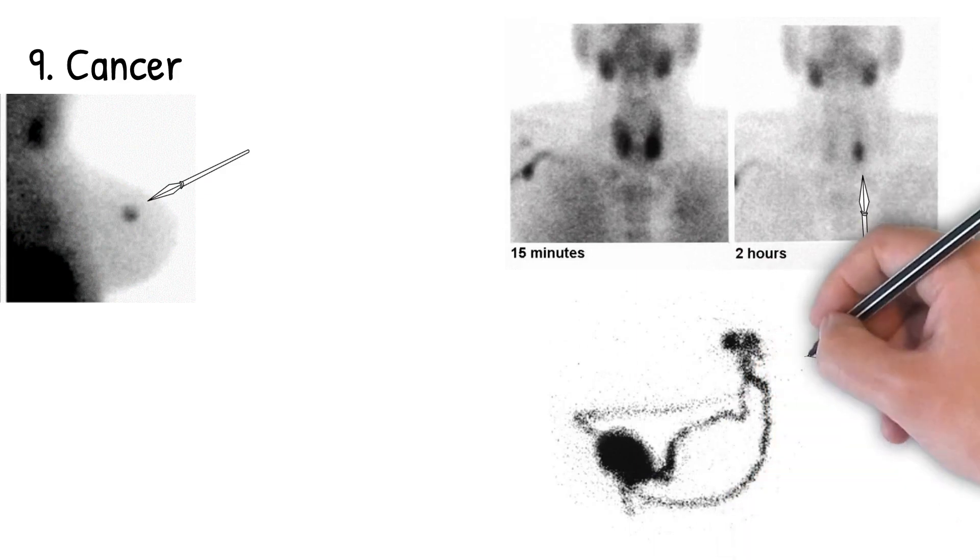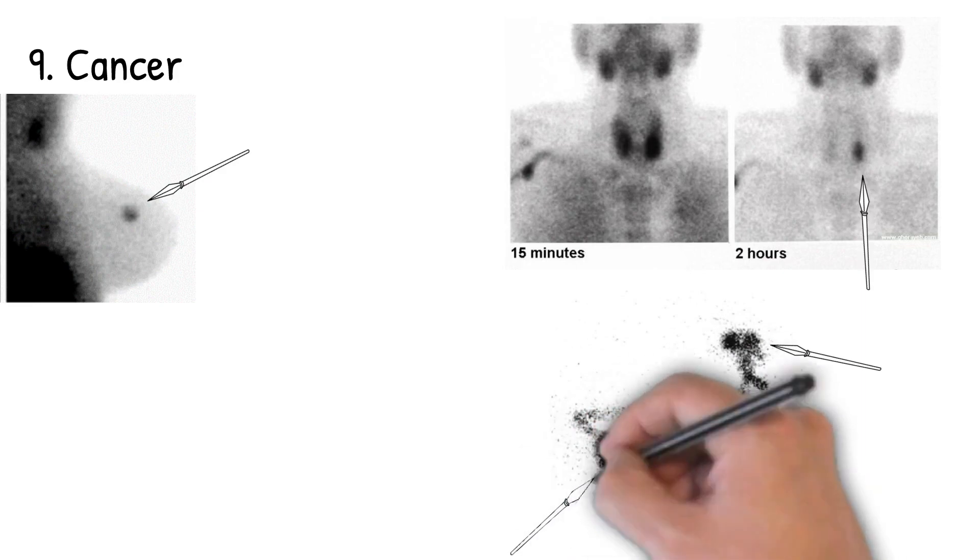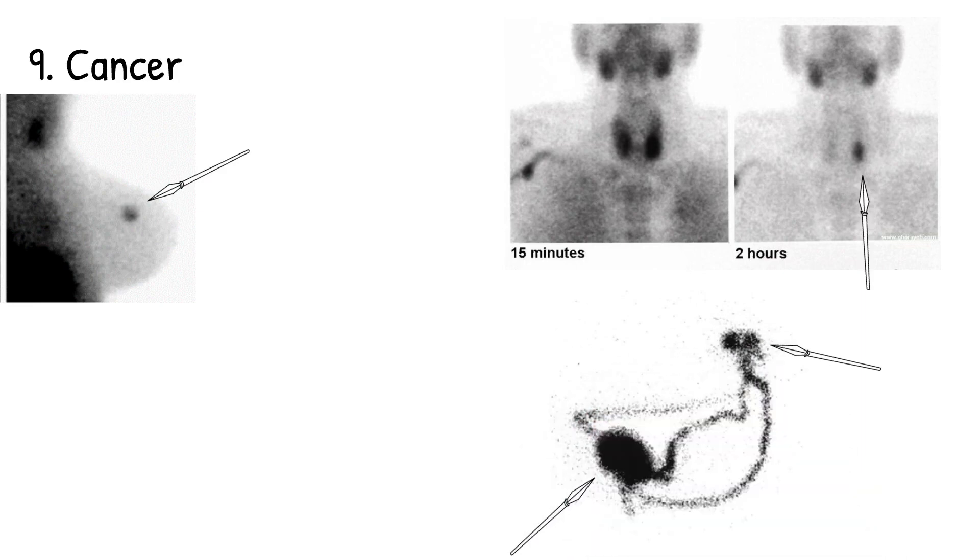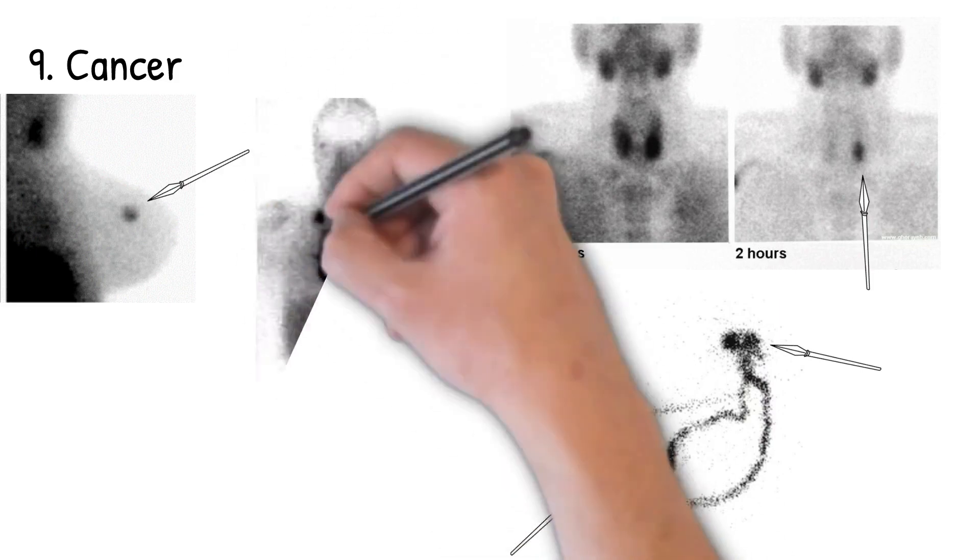And a really important test we do is looking at the sentinel nodes or identifying the sentinel nodes in breast and melanoma patients, as well as other kinds of cancers, where the arrows show the sentinel node versus the injection site to guide the surgeon.